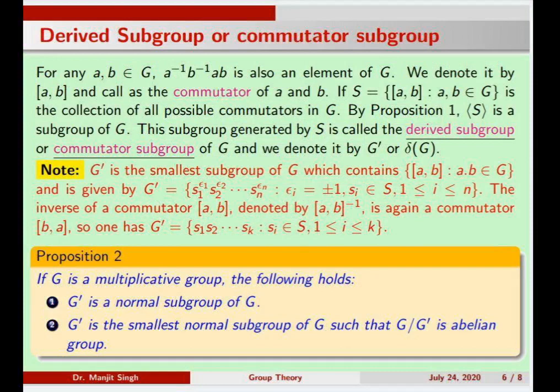Now we come to the derived subgroup or commutator subgroup. For any elements a, b in G, there exists a unique element a⁻¹b⁻¹ab, denoted [a, b], called the commutator of a and b. The set S of all commutators of G generates a subgroup by Proposition 1, and this subgroup is called the derived subgroup or commutator subgroup, denoted G′ or δ(G).